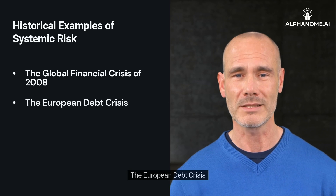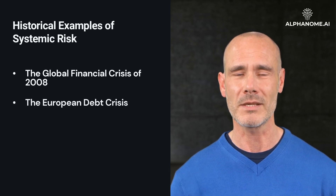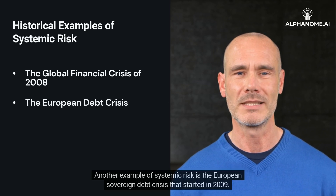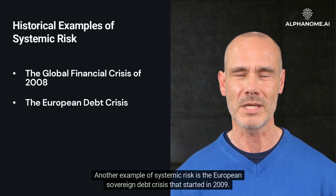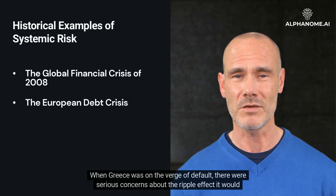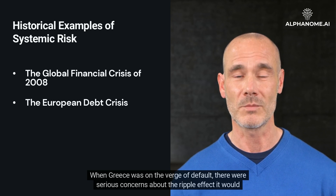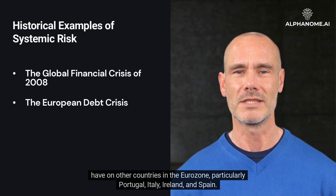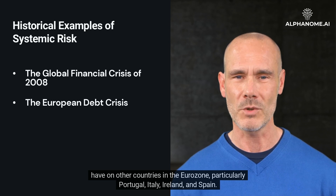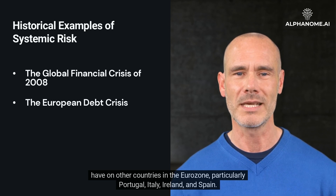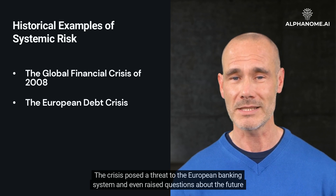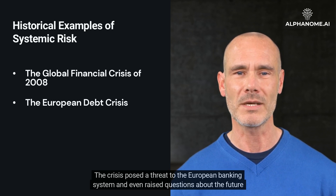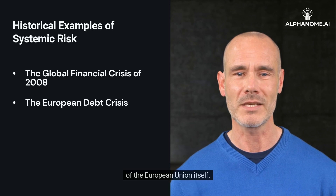Another example of systemic risk is the European Sovereign Debt Crisis that started in 2009. When Greece was on the verge of default, there were serious concerns about the ripple effect it would have on other countries in the eurozone, particularly Portugal, Italy, Ireland, and Spain. The crisis posed a threat to the European banking system and even raised questions about the future of the European Union itself.